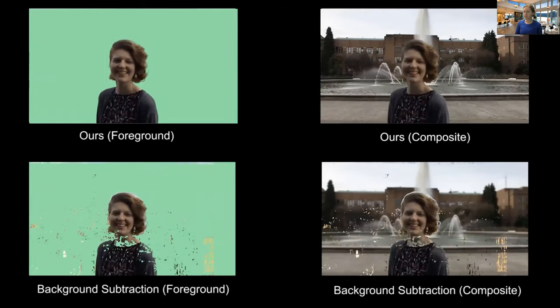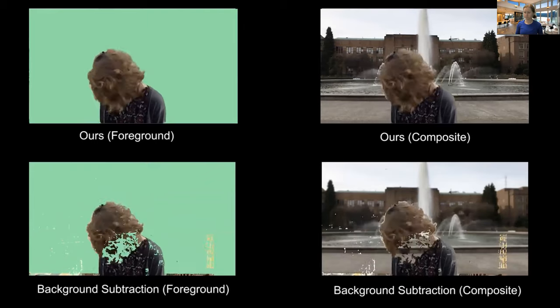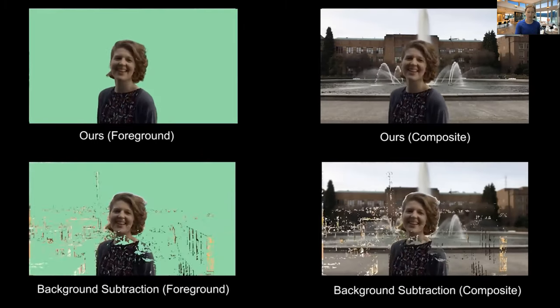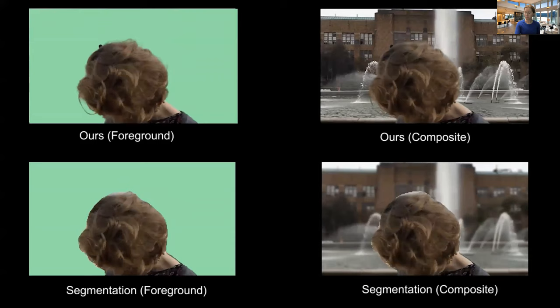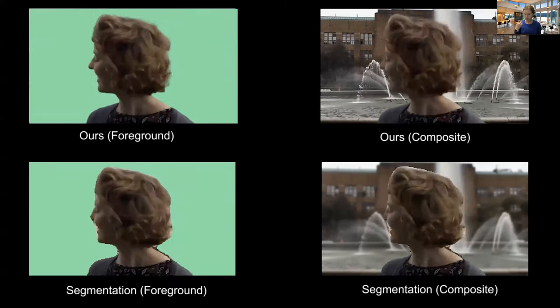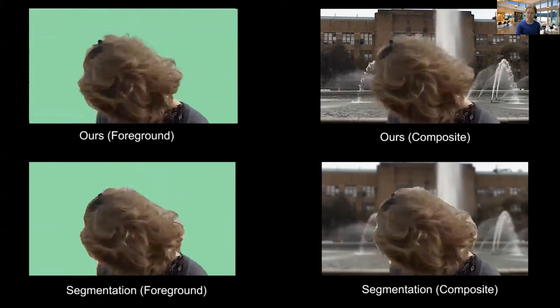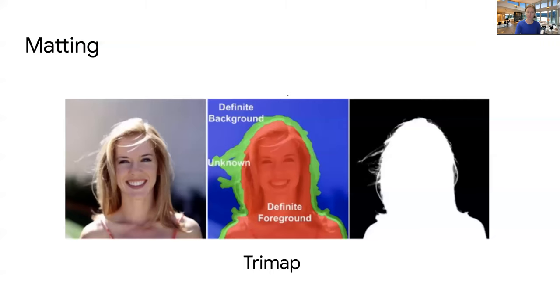So let's look on comparison and video comparison of our method and background subtraction methods. So at the bottom, you see the background subtraction and at the top, you see our method and composite. So you can visually understand the artifacts that can occur. Here's a similar comparison with the segmentation. So it's much better at understanding where the foreground is, but still the silhouette and the outline is not as great.